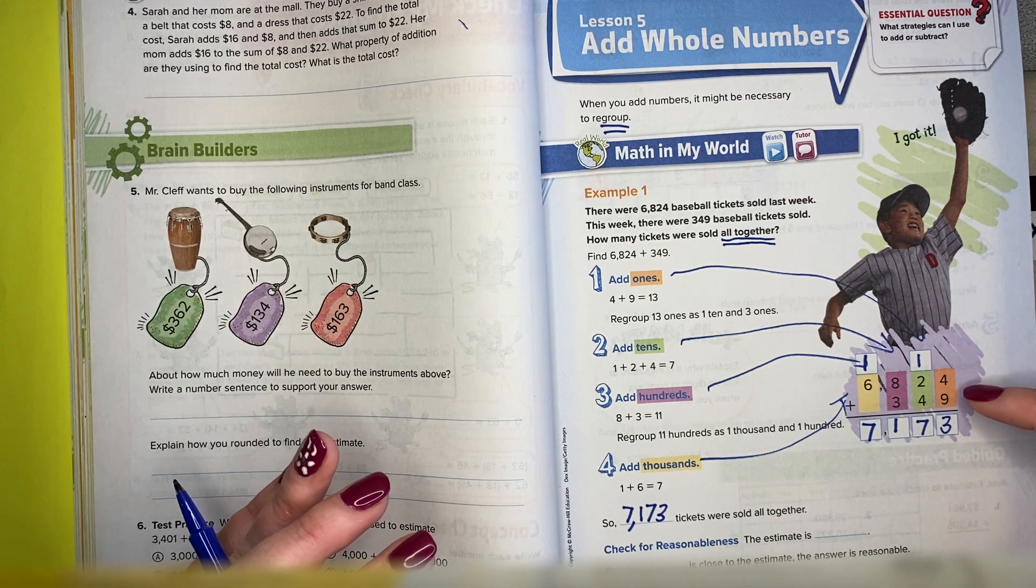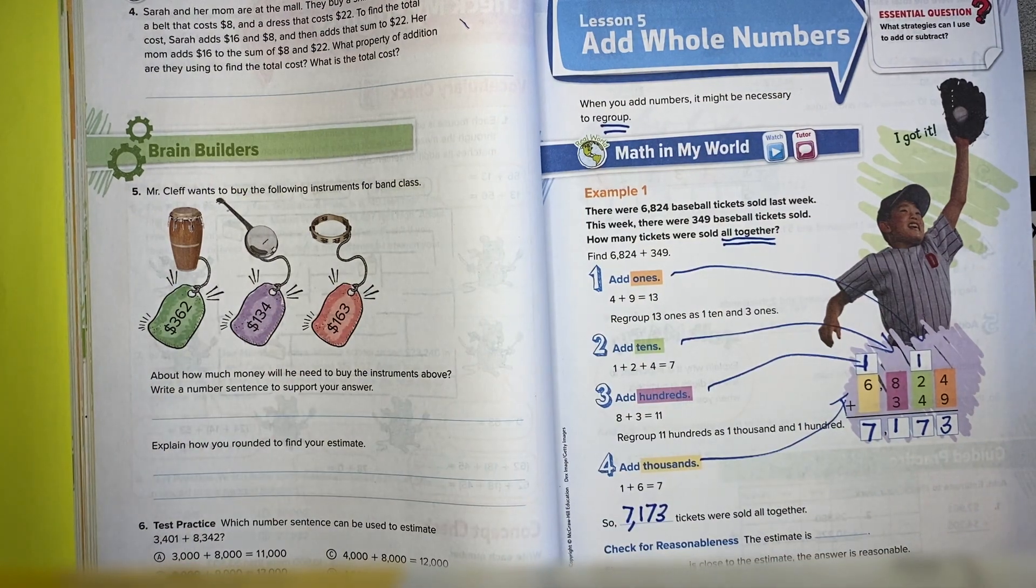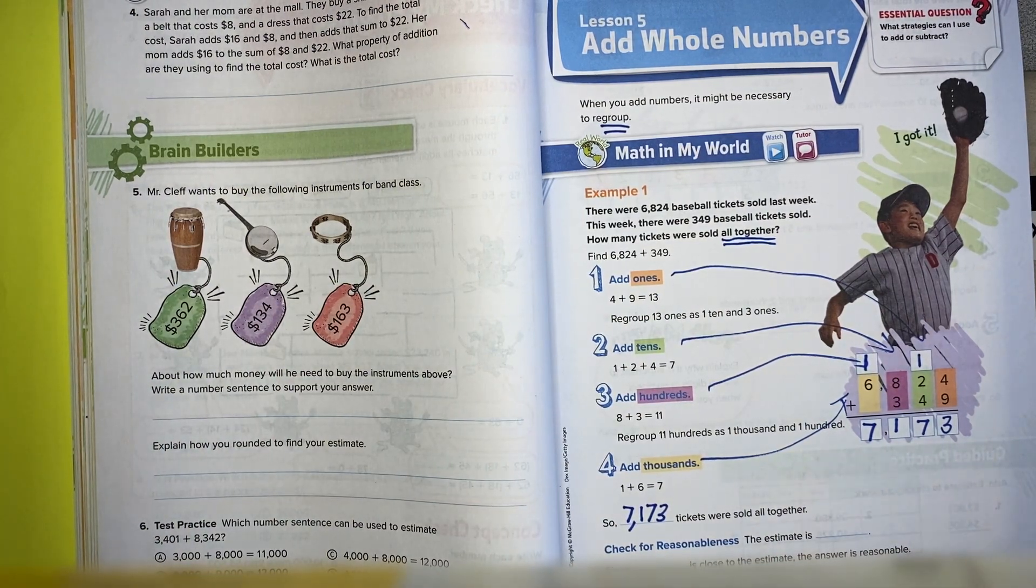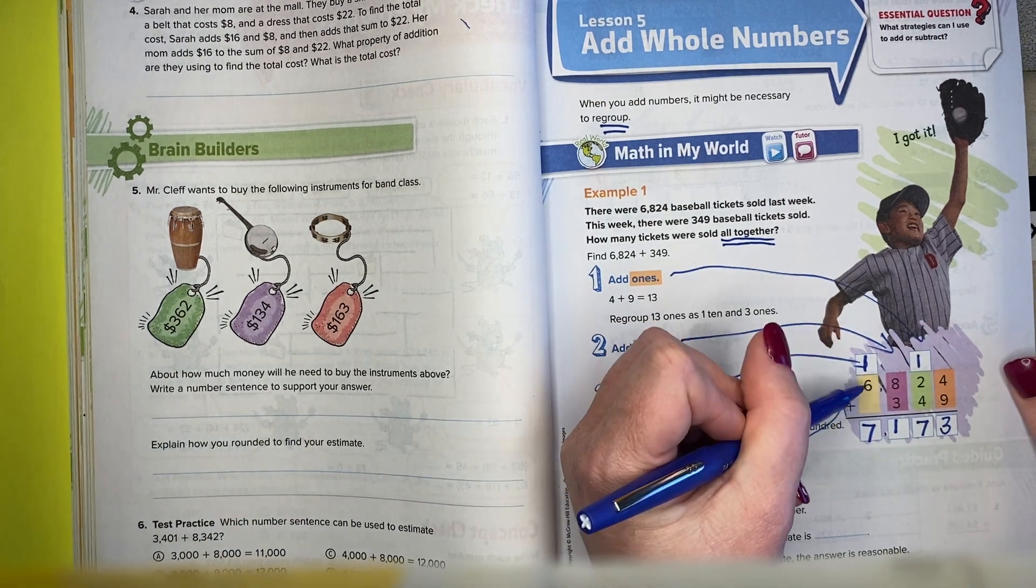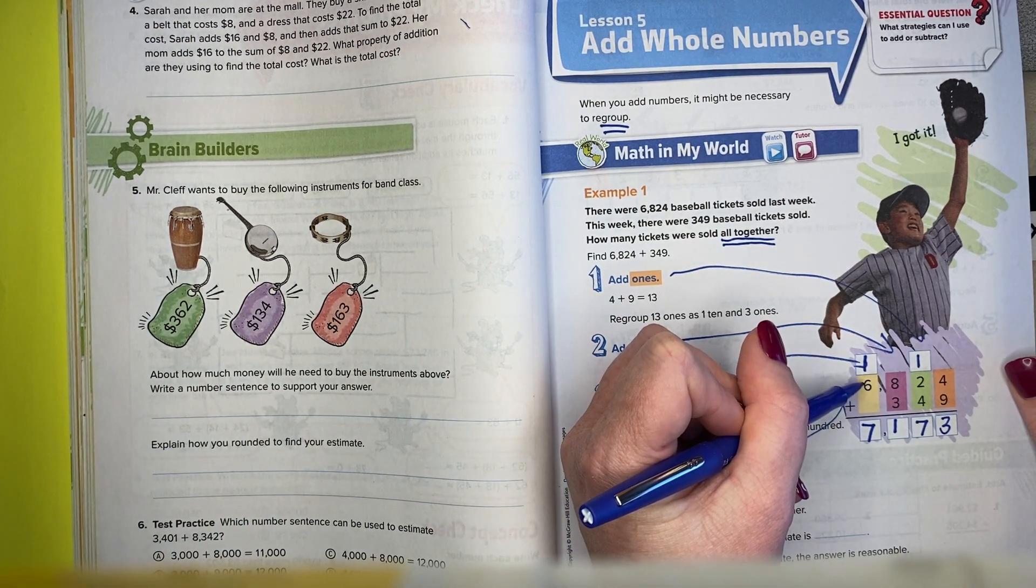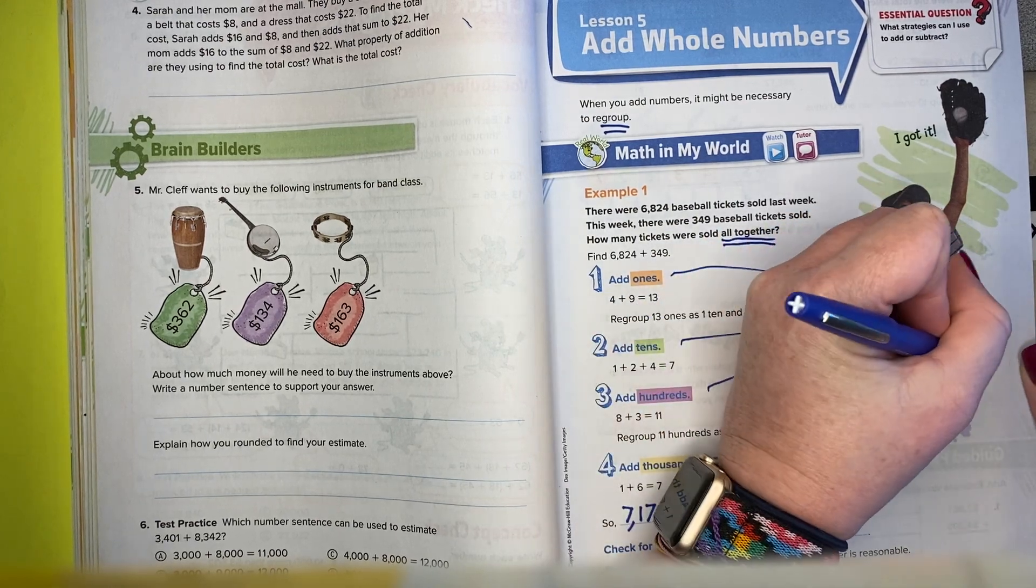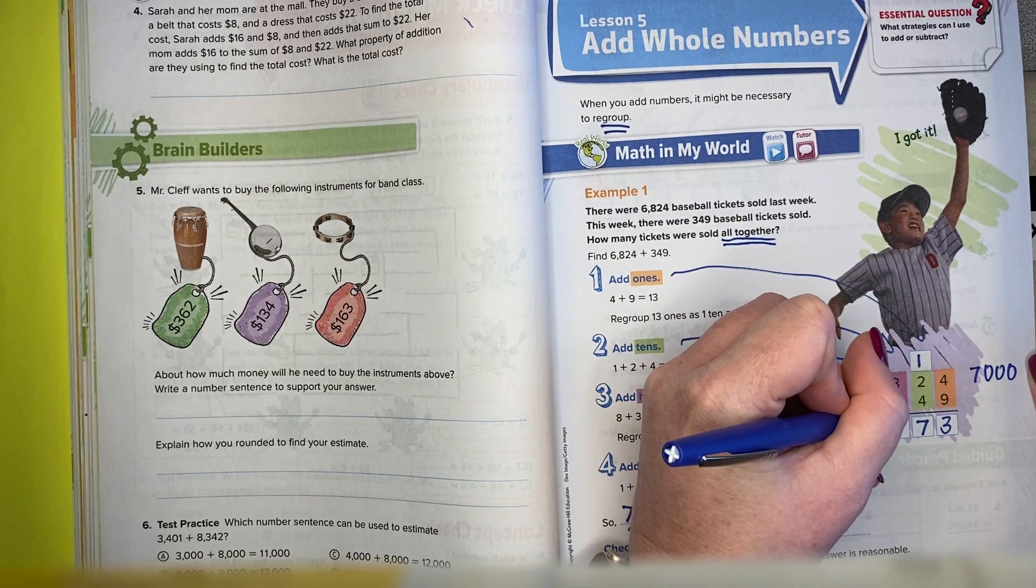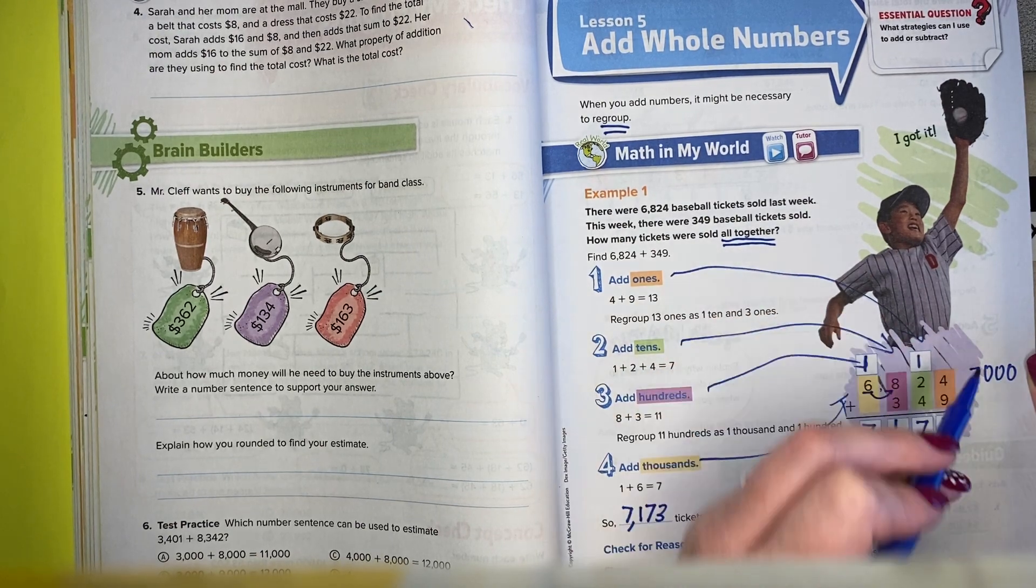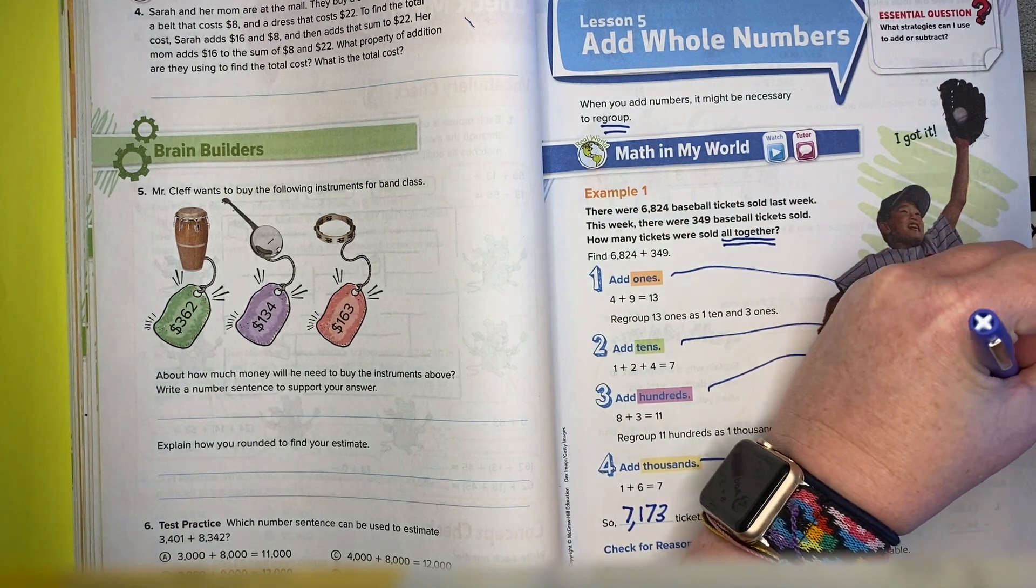So I'm going to estimate 6,824, and they didn't tell me which place value to round to, so I'm going to round to the largest place value like I told you in the last lesson. So 6,824 to the largest place value, that 8 would tell my 6 to go up 1, so it would be like 7,000. And then 349, the 4 would tell my 3 to stay, so I'd have 7,000 plus 3,000.